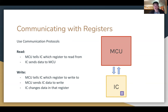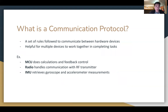Our MCU needs to talk to a register in an IC, or integrated circuit, and we use these for two main purposes: read and write. Read is receiving data from the IC, and write is sending data to the IC. In read, you just tell the IC which register you want to read from and the IC sends the data. But in write, you tell the IC which register to write to, what the data is, and then the IC changes it. Communication protocols are essential — like the English language, they're a set of rules. Without them, we wouldn't know what bytes mean what. They're very important for our MCU, IMUs, and radio all working together.